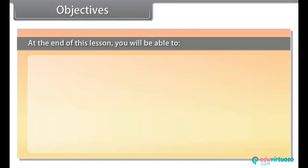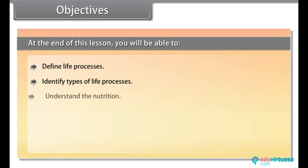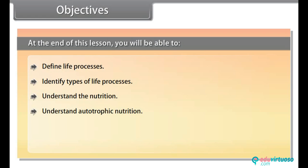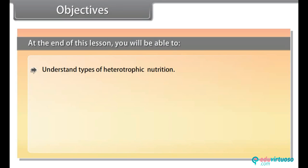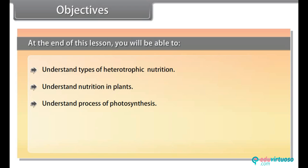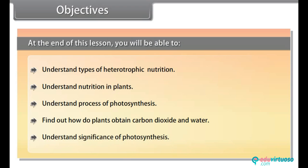At the end of this lesson you will be able to: define life processes, identify types of life processes, understand nutrition, understand autotrophic nutrition, understand heterotrophic nutrition, find the types of heterotrophic nutrition, understand nutrition in plants, understand the process of photosynthesis, find out how plants obtain carbon dioxide and water, and understand the significance of photosynthesis.